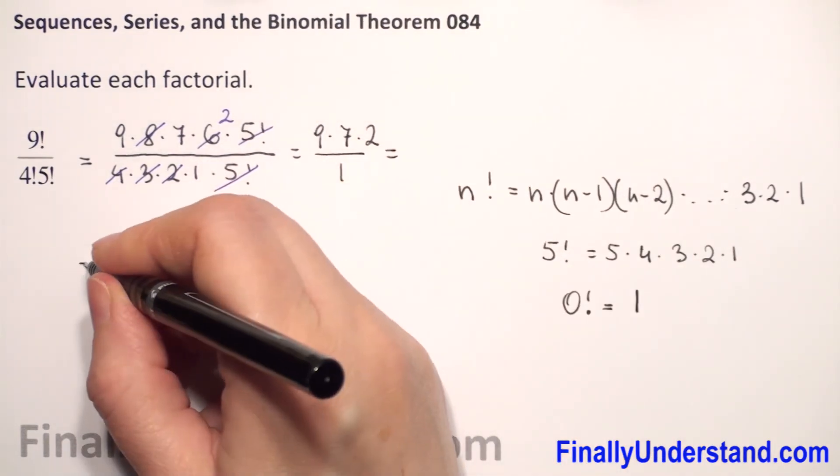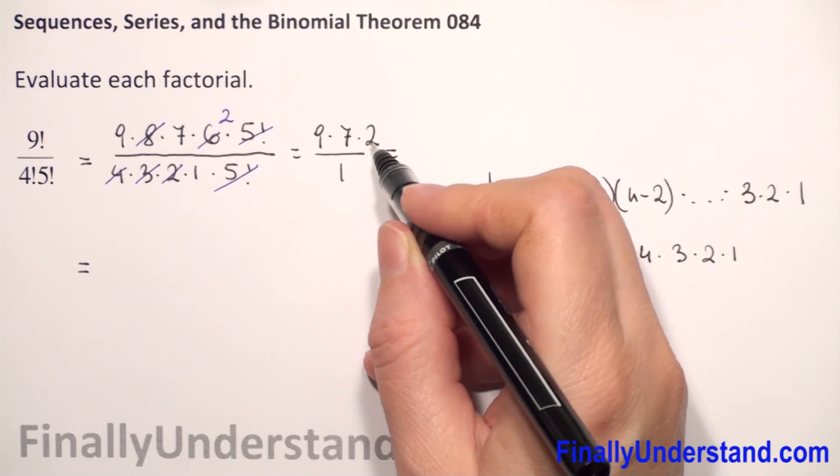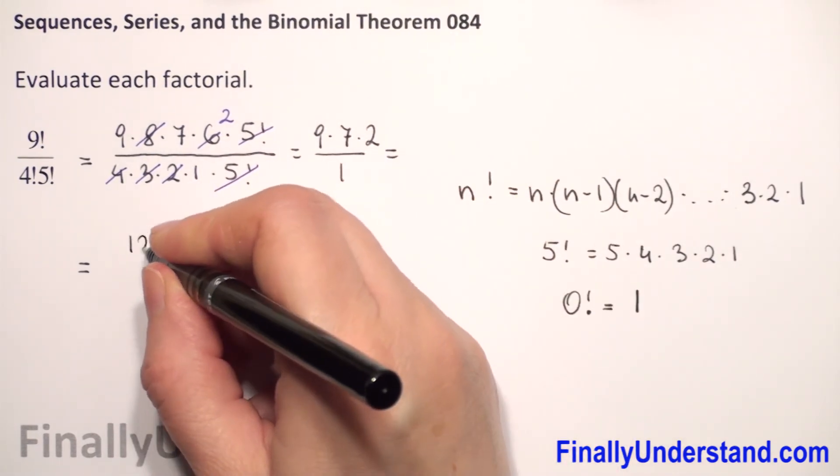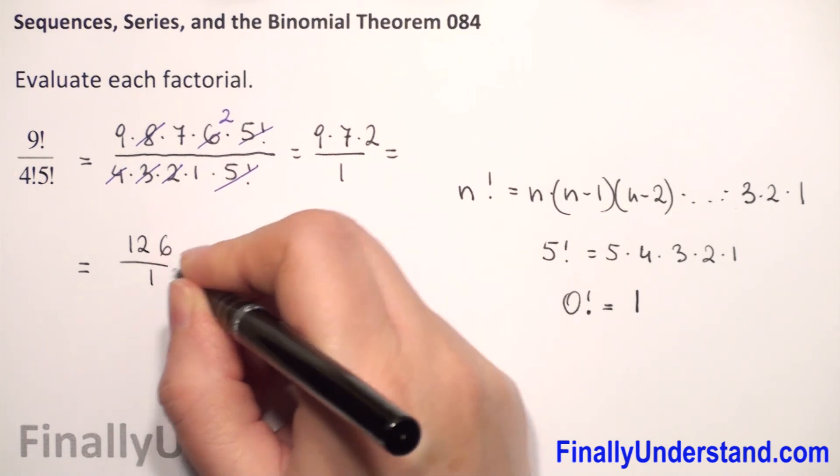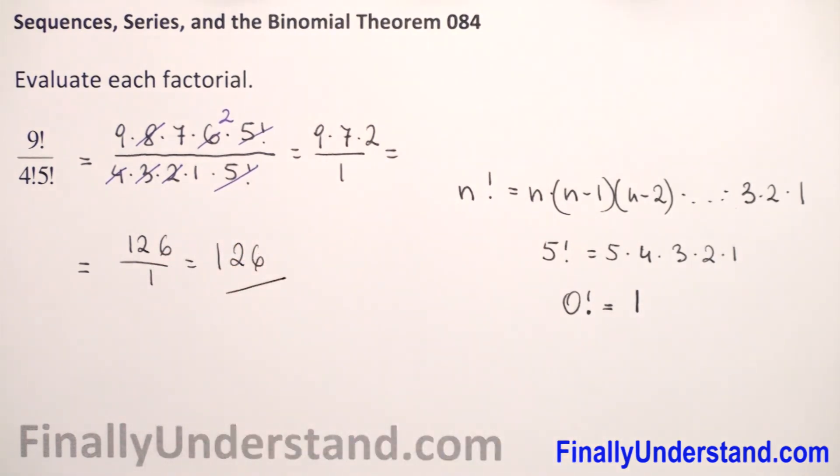This is equal to 9 times 7 is 63, times 2 is 126 over 1. So this is 126. This is my solution.